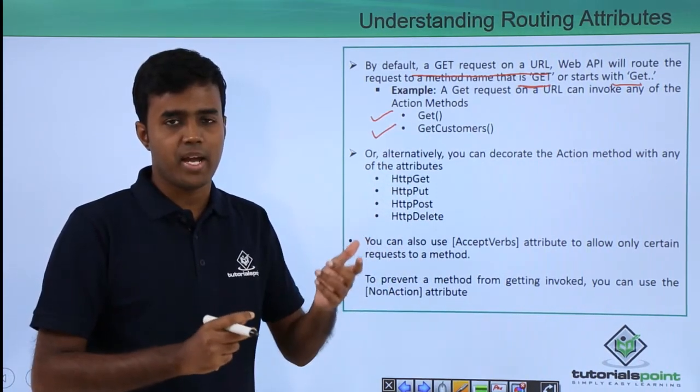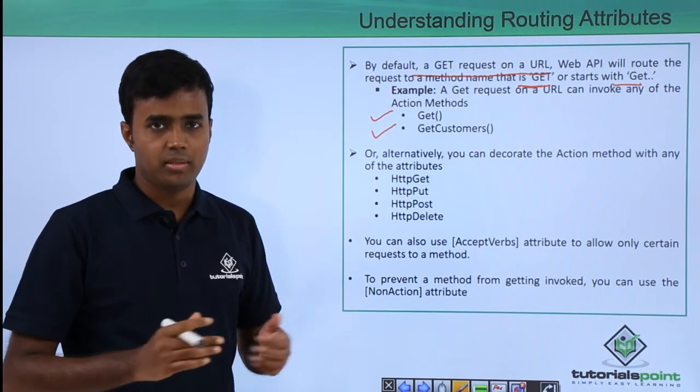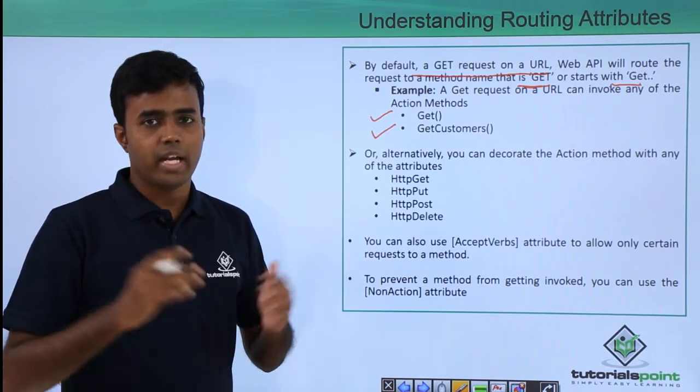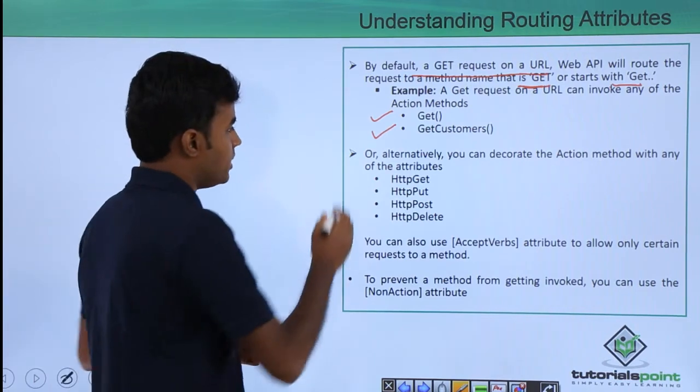As you can see, this is not always scalable because I may have many different GET methods and all GET methods may not always necessarily start with GET. To overcome this, what you can do is define something called routing attributes.